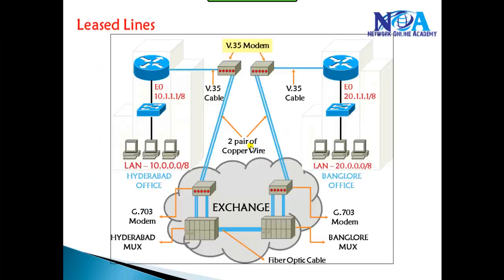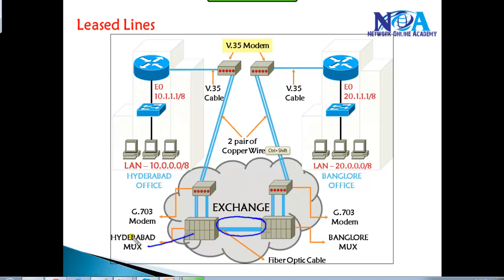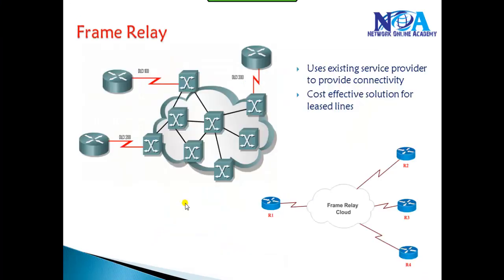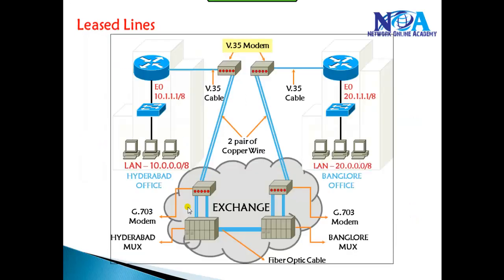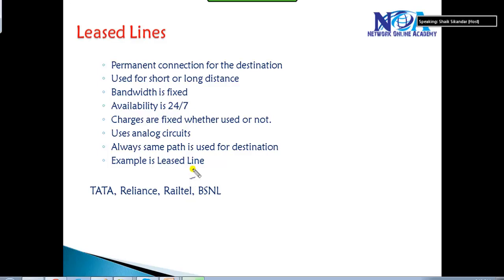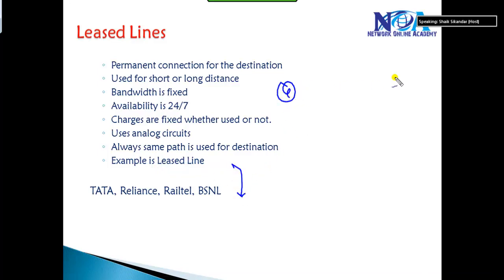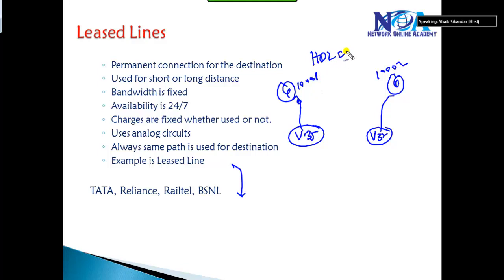The service provider has to build a separate dedicated circuit for each link, and connecting each branch or exchange is not really scalable. In summary, leased lines are dedicated connections from the provider, but are somewhat expensive. Once connected, you assign IP addresses on both sides of the serial link, apply an encapsulation such as HDLC or PPP, and start communicating using routing protocols.